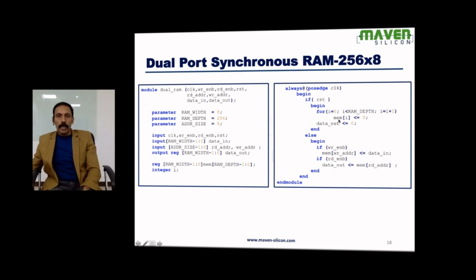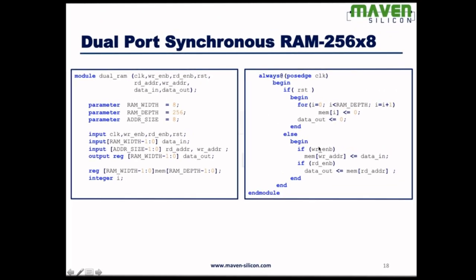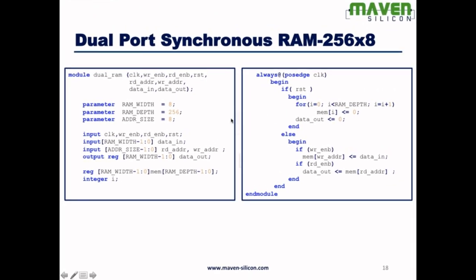And before performing write and read operation, basically it's going to check reset always. So here reset has highest priority. If reset is high, then you reset the memory—all the locations have to be initialized with zero, right? That's what happens in reset. If there is no reset, then you perform the operation, whether it is write or read. This is how you can define memory.